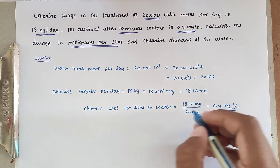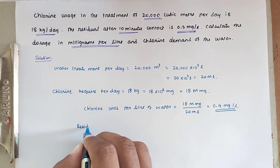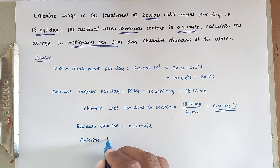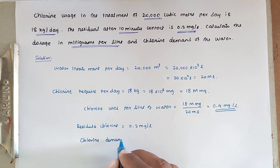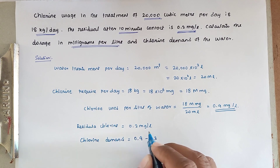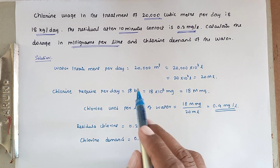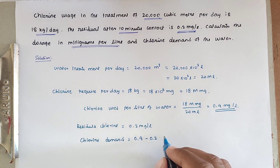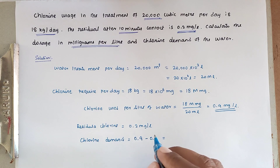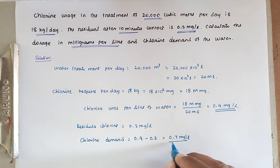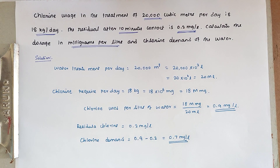Now for the residual chlorine: the actual chlorine demand is 0.9 mg/L required minus 0.2 mg/L residual after contact. Since 0.2 milligram per liter remains as residual, the actual chlorine demand is 0.9 minus 0.2, which equals 0.7 milligram per liter. This is the actual chlorine demand. We will see the next problem in the next video — thank you.